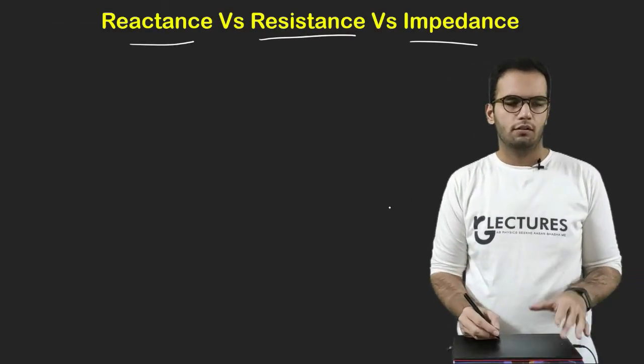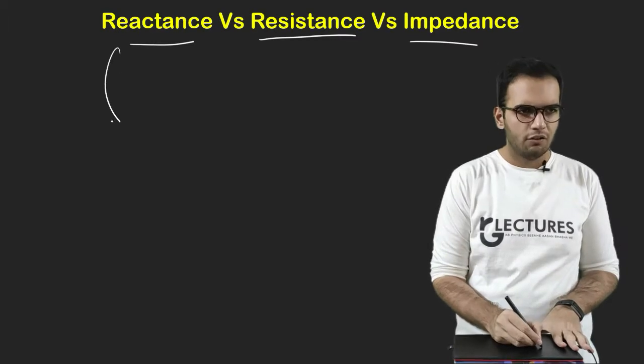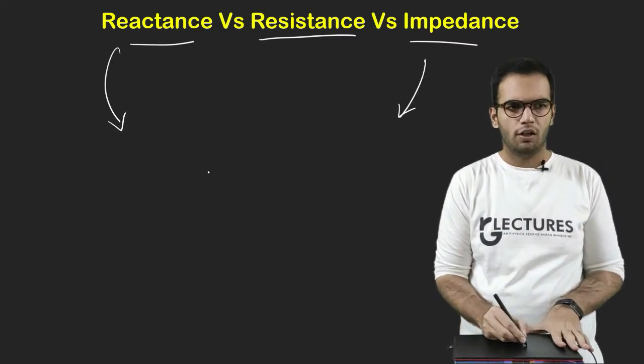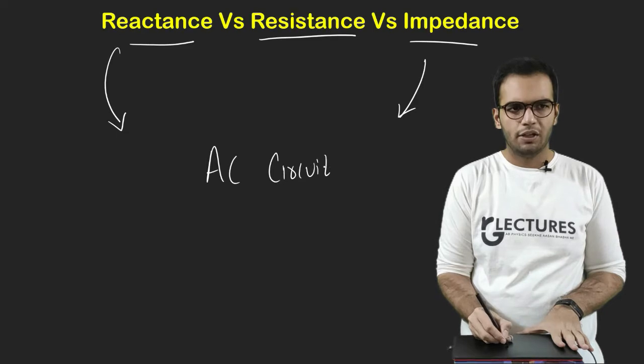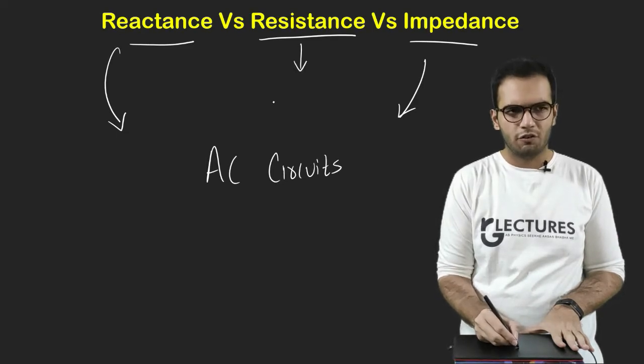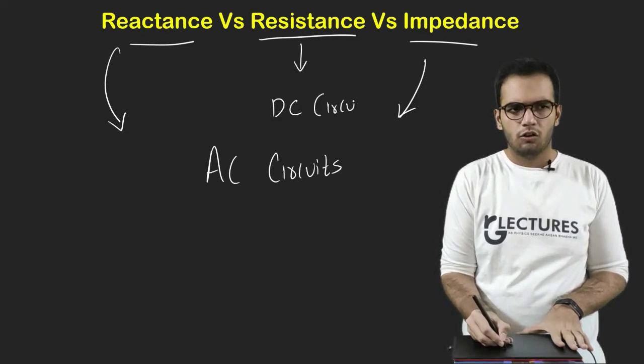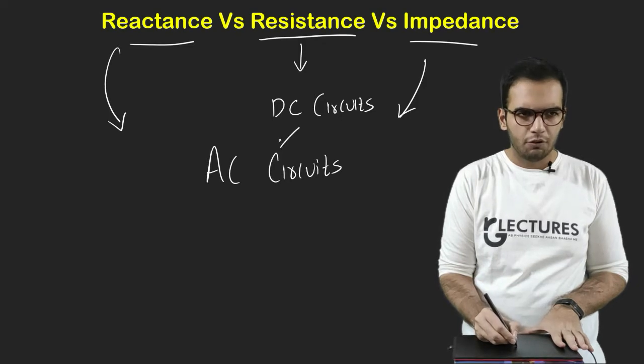Now we have heard the terms of reactance and impedance in AC circuits, and we have seen the concept of resistance in DC circuits. Now, what is the actual difference between these two?